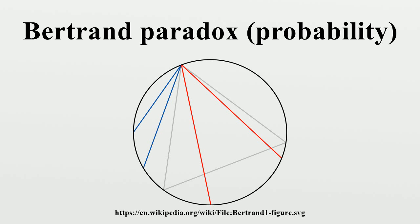The random endpoints method: choose two random points on the circumference of the circle and draw the chord joining them. To calculate the probability, imagine the triangle rotated so its vertex coincides with one of the chord endpoints. If the other endpoint lies on the arc between the endpoints of the triangle side opposite the first point, the chord is longer than a side of the triangle. The length of that arc is one third of the circumference, so the probability is one third.